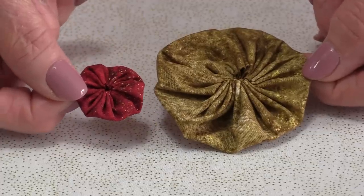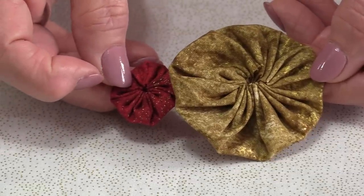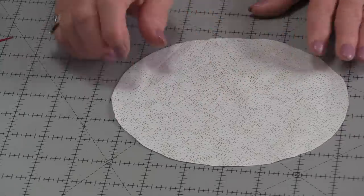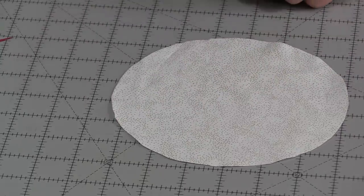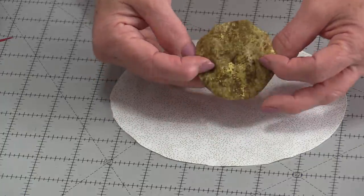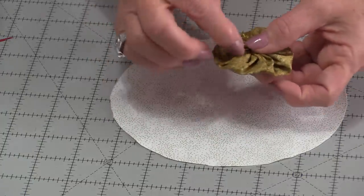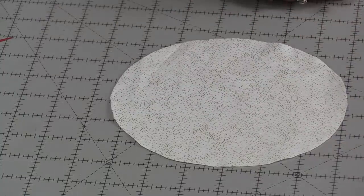They can be made in any size. To make the yoyos, we need to start with a circle of fabric. I would recommend that your fabric is pressed and there's no wrinkles in it, because once the fabric yoyo is put together there will be no pressing to take out any of those wrinkles. So start with a wrinkle-free circle.